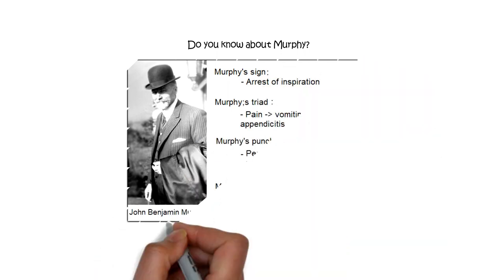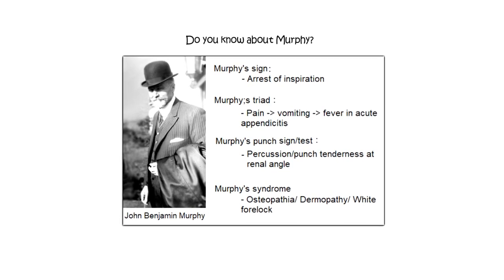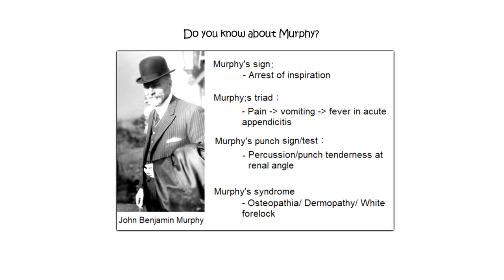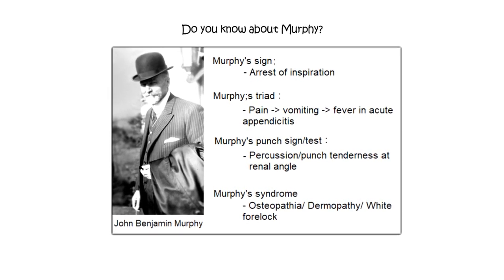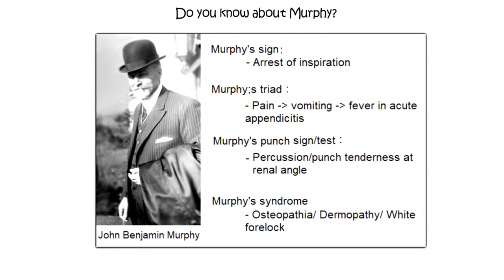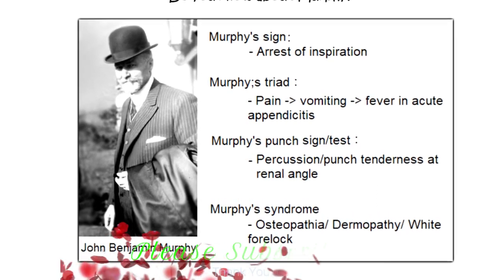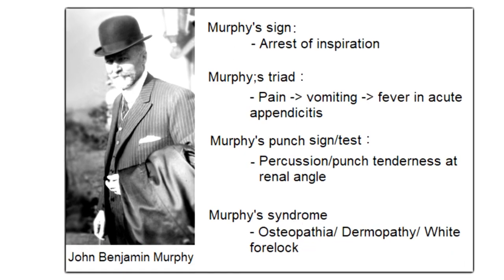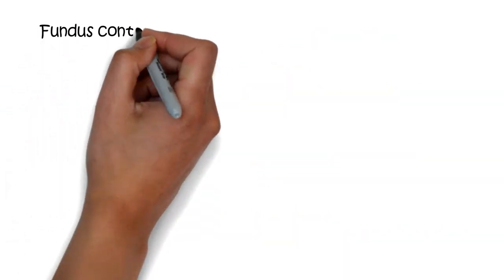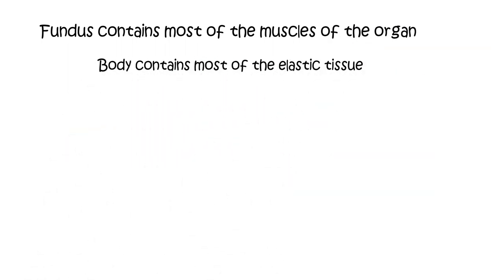Murphy refers to John Benjamin Murphy, an American physician and abdominal surgeon. Murphy's triad is the sequence of abdominal pain, followed by vomiting, followed by fever, seen in acute cholecystitis. Murphy's syndrome consists of osteopathia striata, pigmentary dermopathy, and white forelock syndrome. Murphy's punch sign or test is percussion or punch tenderness at the costovertebral angle — the renal angle — seen in pyelonephritis and perinephric abscess. The fundus contains most of the smooth muscle of the organ, in contrast to the body, which is the main storage area and contains most of the elastic tissue.